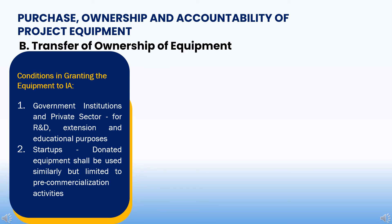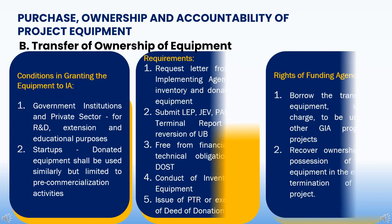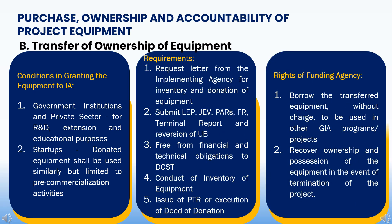Upon completion of the project, the funding agency may allow transfer of ownership of equipment without cost in favor of the institution which implemented the project, subject to conditions. Requirements include: a request letter from the implementing agency for inventory and donation of equipment; submission of LEP, JEV, PAR, FR, Terminal Report, and Reversion of Unexpended Balance; being free from financial and technical obligations to DOST; conduct of inventory of equipment; and issuance of a PTR or execution of a deed of donation.